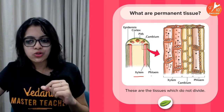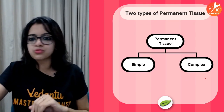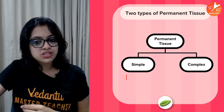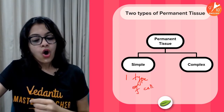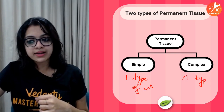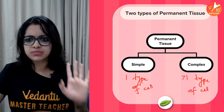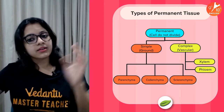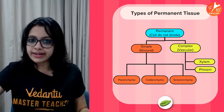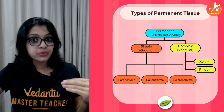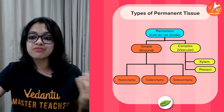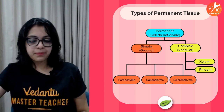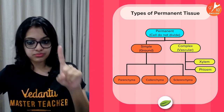Permanent tissue can either be simple, made up of just one type of cell, or complex, made up of more than one type of cell. Simple tissues are also called ground tissue; complex tissues are also called vascular tissue. Simple tissue may be parenchyma, collenchyma, or sclerenchyma — and complex tissue may be xylem or phloem.